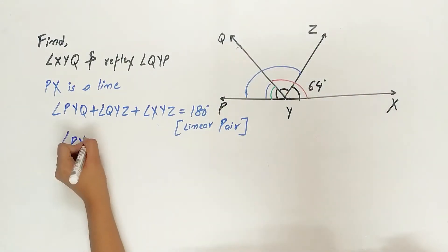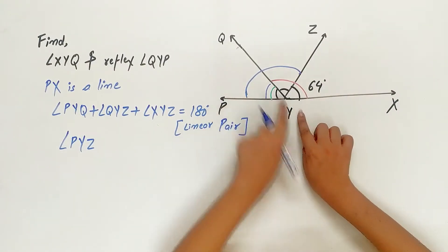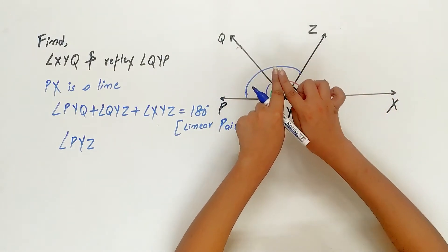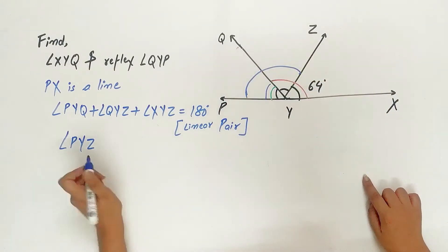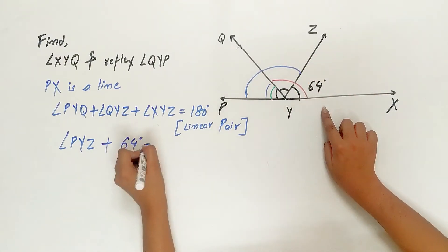Angle PYZ is made up of two angles: angle PYQ and angle QYZ. Both together they form PYZ plus angle XYZ which is equal to 64 degrees. That's given to us.